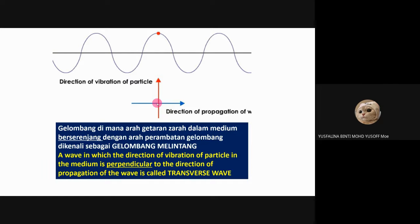What is the meaning of a transverse wave? A wave in which the direction of vibration of the particle in the medium is perpendicular to the direction of propagation of the wave. So the direction of propagation of the wave is perpendicular to the direction of vibration of the wave particle. That is a transverse wave. Let's see the video using the slinky spring.